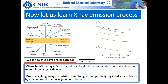X-ray emission: there are two kinds. One comes from your elemental characteristic X-rays — the result of a core electron being kicked out, and then an electron from a higher orbit jumps down to fill the vacancy. In this process, X-rays are emitted carrying information about the element they belong to. Then there are Bremsstrahlung X-rays, which are useful to biologists but are considered a nuisance by material scientists.